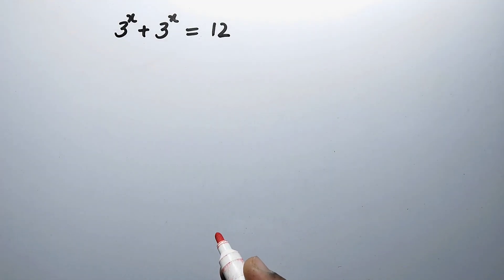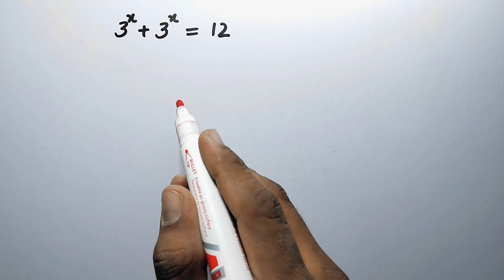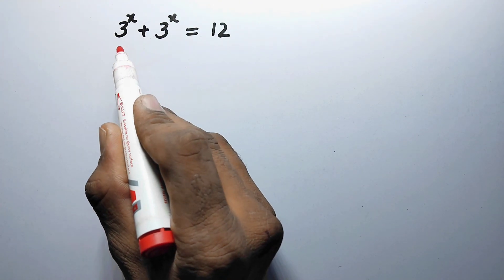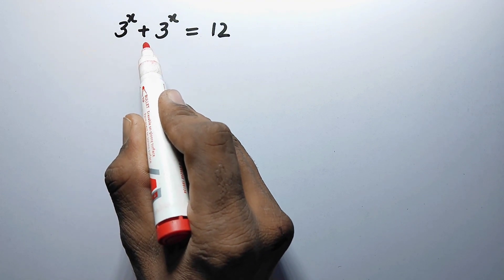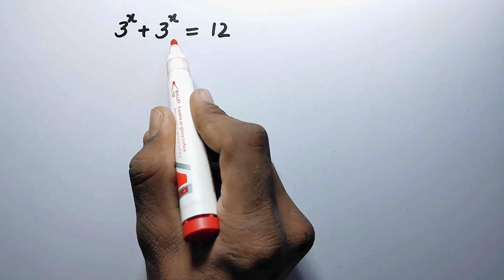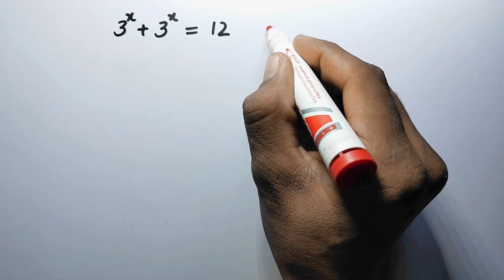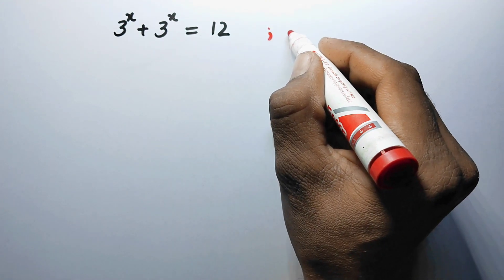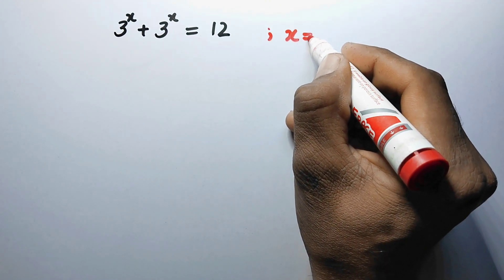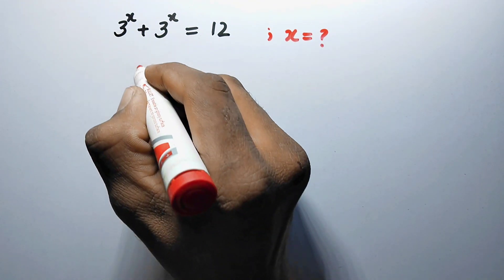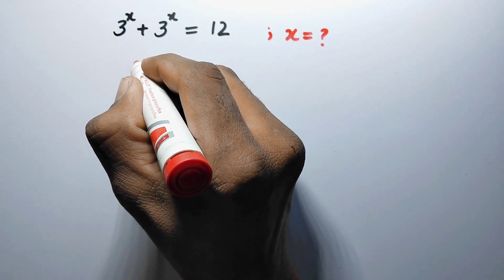Hello everyone, how are you, I hope you all are doing well. Today in this video we are going to solve 3 to the power x plus 3 to the power x is equal to 12, and we have to find the value of x. So let us see its solution.